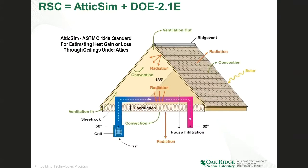Under the hood, the Roof Savings Calculator uses two simulation engines. One is called DOE-2IE, which is a whole building simulation package. The other is AtticSim, which does high-fidelity physics simulations of what goes on in a roof and attic assembly — simulating conduction, convection, and radiation at every surface. AtticSim is part of a standard called ASTM C1340, which goes through a thorough vetting process with lots of industry review before being accepted. We've tied this high-fidelity physics simulation of the roof and attic to a whole building model so that we know how much energy you would save in heating and cooling your home.